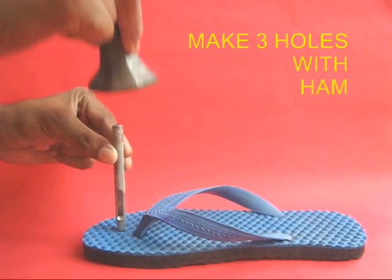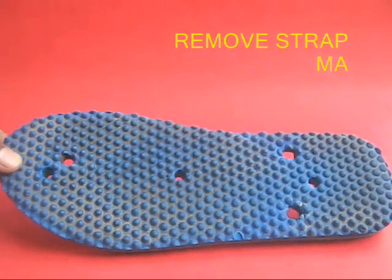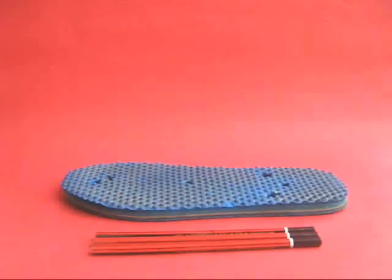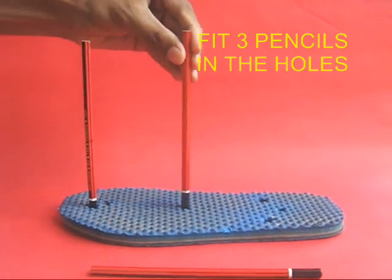Now hammer the punch to make three holes in the flip flop or rubber slipper. They would be all in a line. Now take three pencils and stand them in these holes.